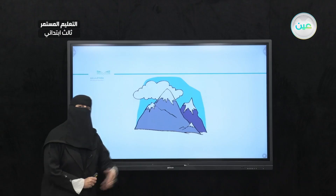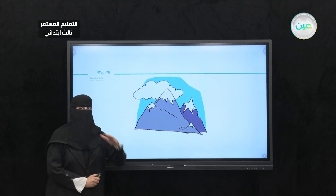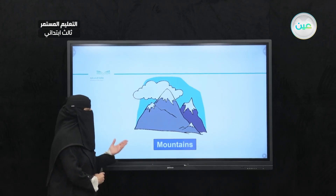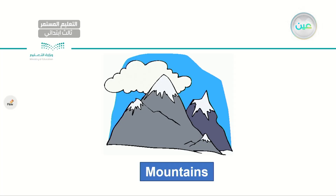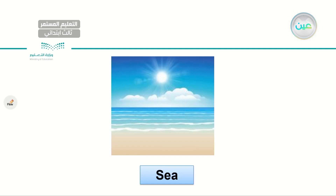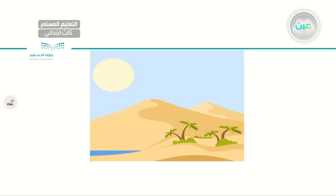How about this picture? We have a range of mountains. Let's read: mountains. We have a range of mountains in Asir. How about this one? I have a sea. Let's read: sea. How about this one? It is a desert. Let's read: desert. Now, help me choose the correct answer. These are mountains or hills? Very good — these are mountains. How about this one: this is a village. Do you think this is a true or false statement? Actually, it's a false sentence. This is not a village — it is a desert.